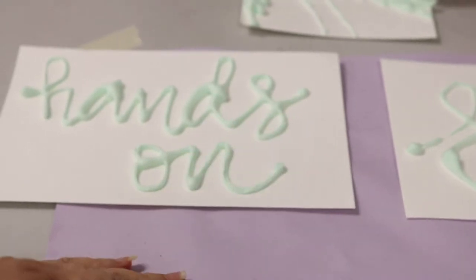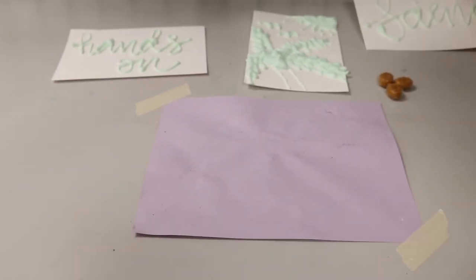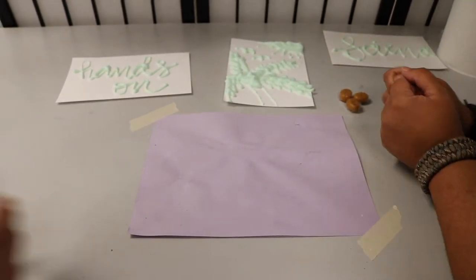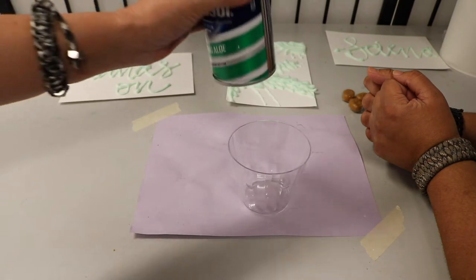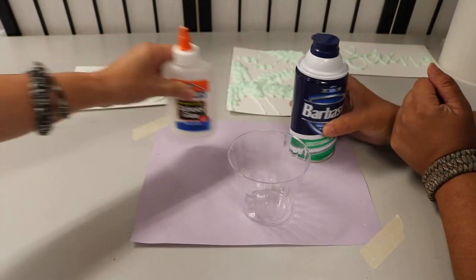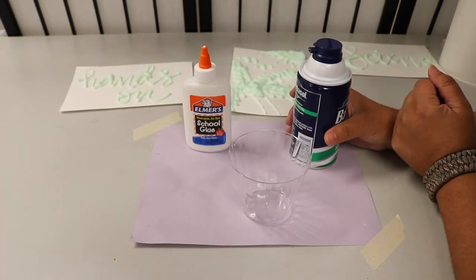Shall we make some of these? I would love to make some of these. This is rad. Let's move this to the side. And it's really simple. There's a cup. You just need some shaving cream. There you go. And some glue. That's it. And food coloring.